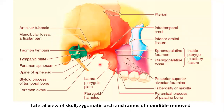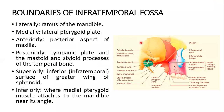Here you can see another picture showing the infratemporal crest. Above it is the sphenoid temporal surface, and below the infratemporal crest is the infratemporal part of the sphenoid bone. We will cover the boundaries and the contents of the fossa, and also the relationships of structures present in the fossa and the bones involved in its formation.